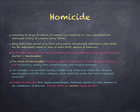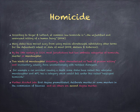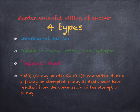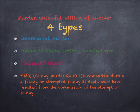Murder is further divided into first degree — which is premeditated, deliberate murder, or some murders committed in the commission of felonies — and second degree murder, which is all murders that don't fall in the first degree. There are four types of murder: intentional murder, intent to cause serious bodily harm, depraved heart murder, and the felony murder rule. The felony murder rule has two categories: the death must have been committed during a felony or attempted felony, and the death must have resulted from the commission of that felony or attempted felony.